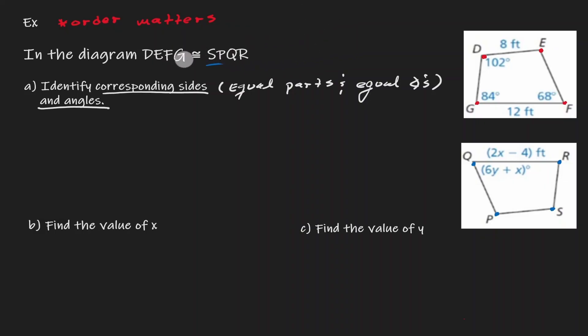We have to pay attention to how we are naming those angles. Notice that D is the first letter within DEFG and S is the first letter within SPQR. So that implies that angle D is congruent to angle S. The order matters.